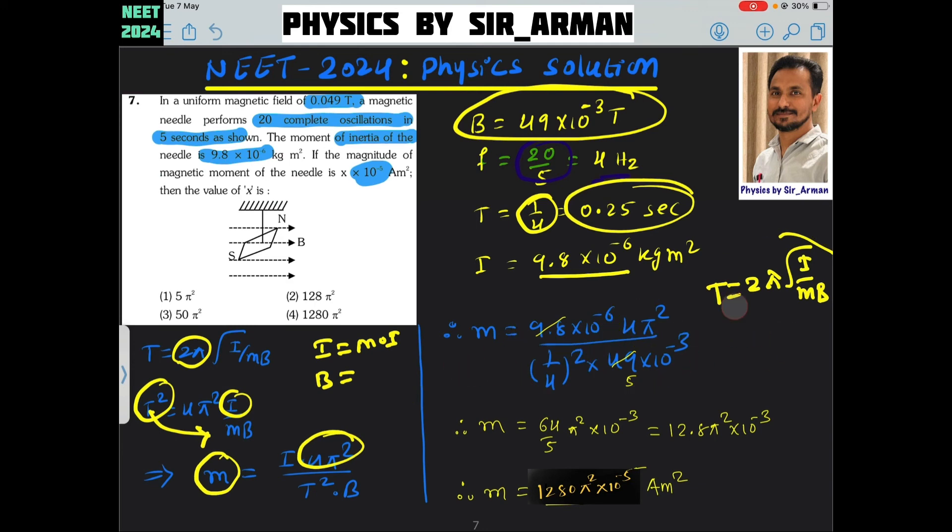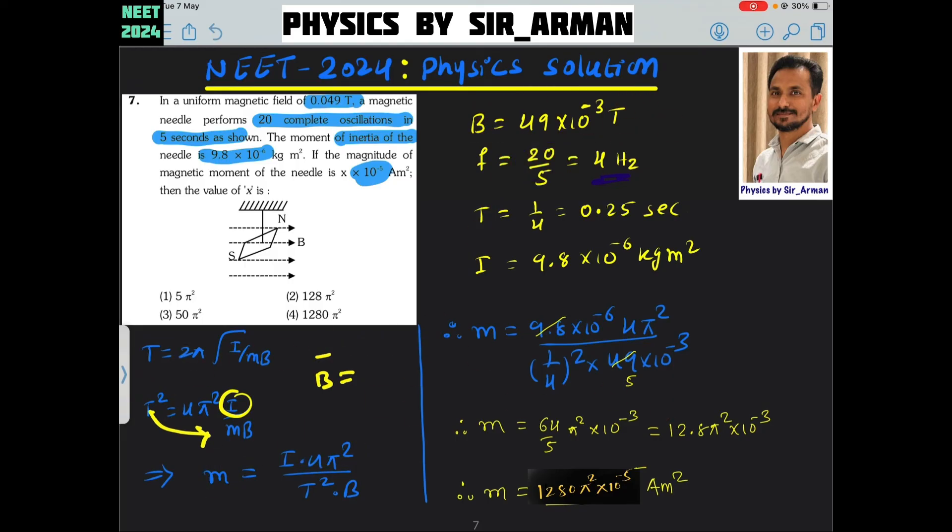If you solve all this, you will get the answer, which I have solved here. It is 1280 into 10 raised to minus 5 ampere meter square. Our correct answer is 1280 pi square, that is option number 4.